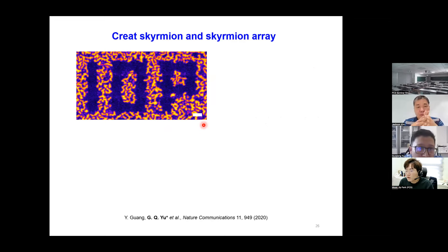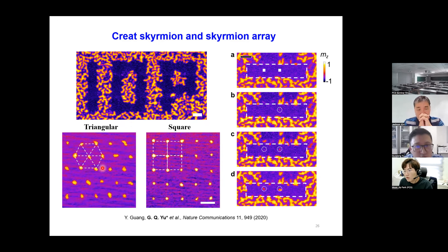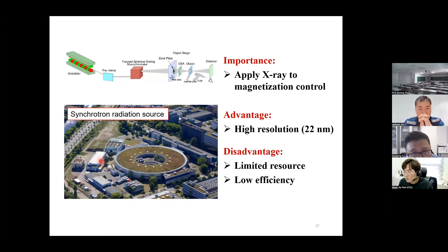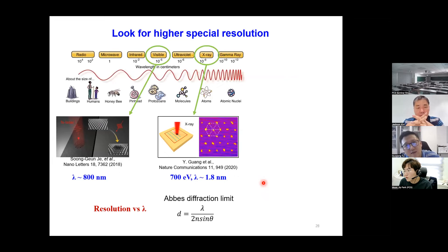Because we have very high resolution with the focused X-ray, we can use this technique to manipulate the magnetization very locally. For example, we made the IOP logo, and we can create a single domain background, and within that background create a single skyrmion or a skyrmion lattice with different configurations. We think the importance of this work is that, since synchrotron radiation sources have been widely used for magnetic detection, this is one of the first demonstrations that they can also be used for manipulation. However, the synchrotron resource is quite limited and the efficiency is low, so we need another way to create skyrmions.